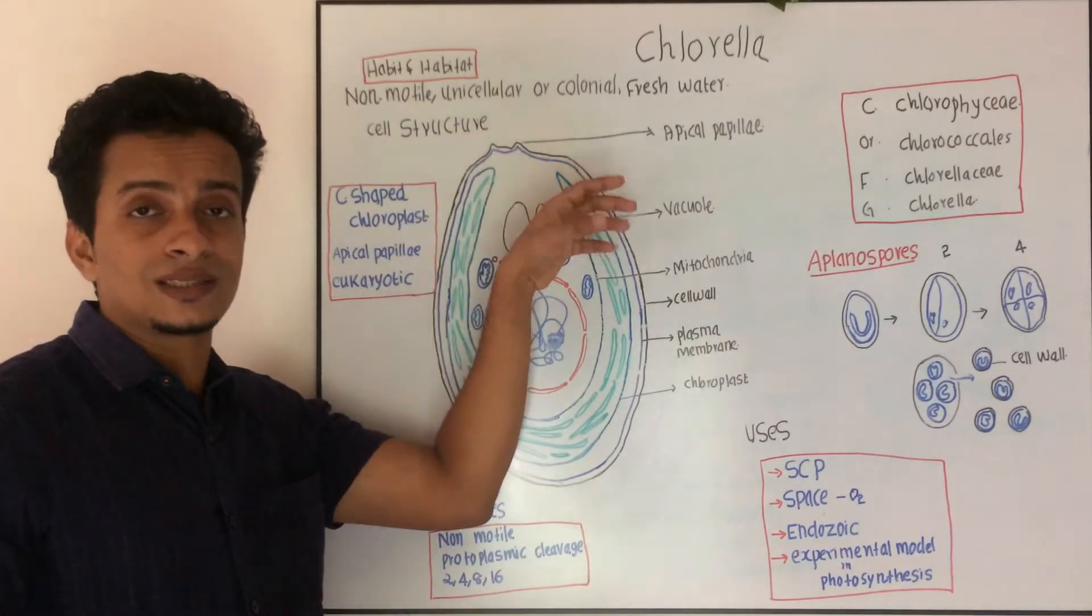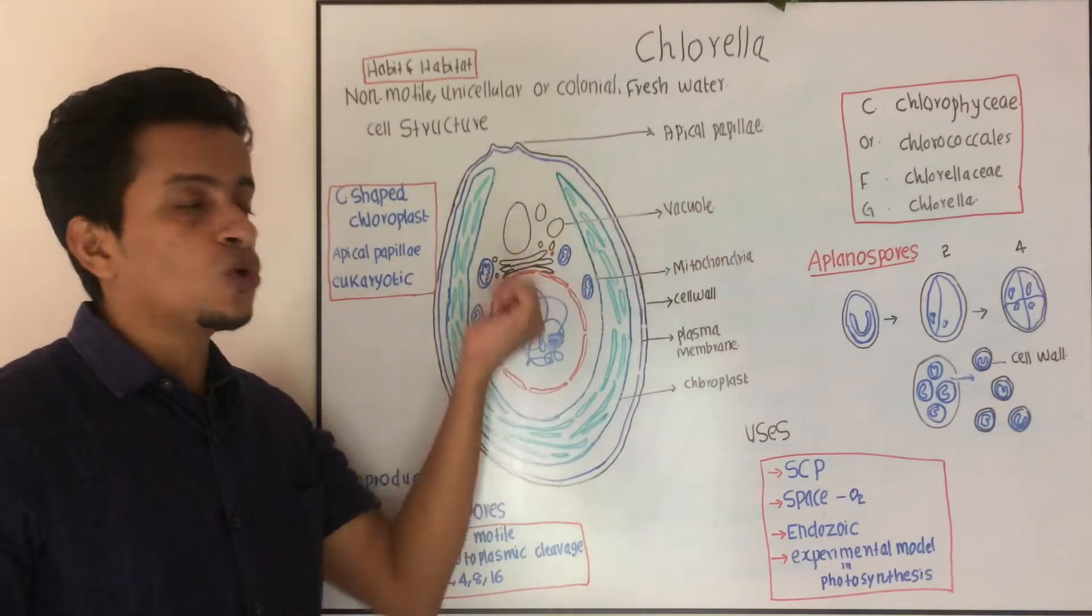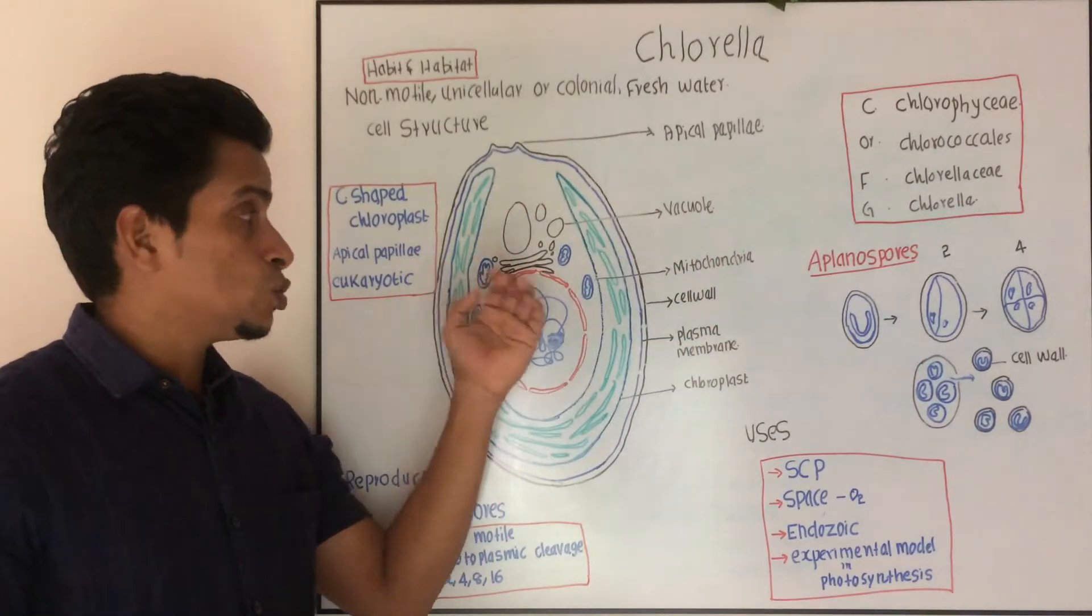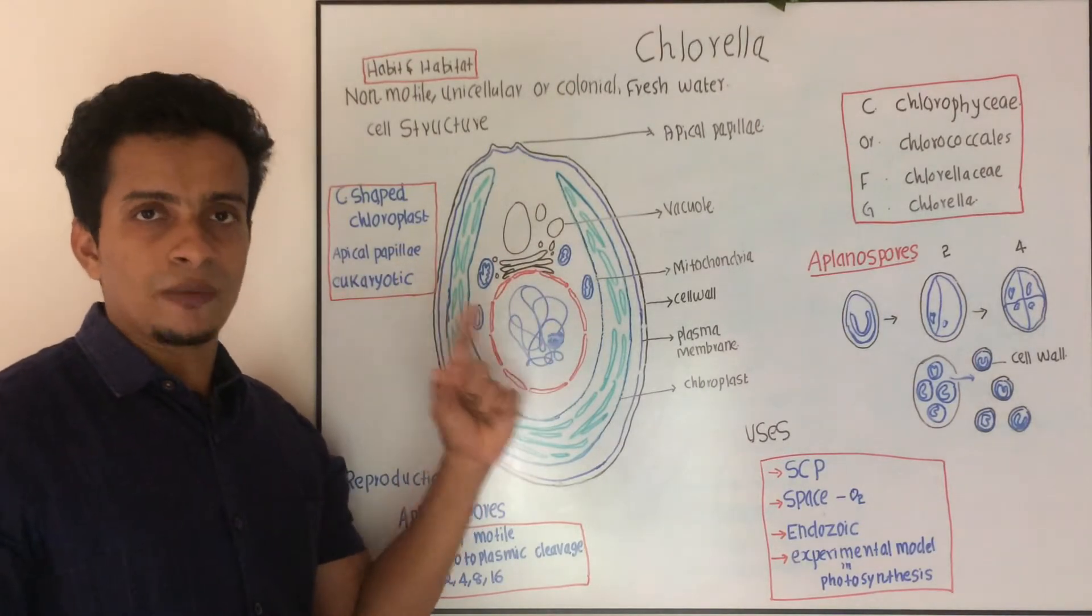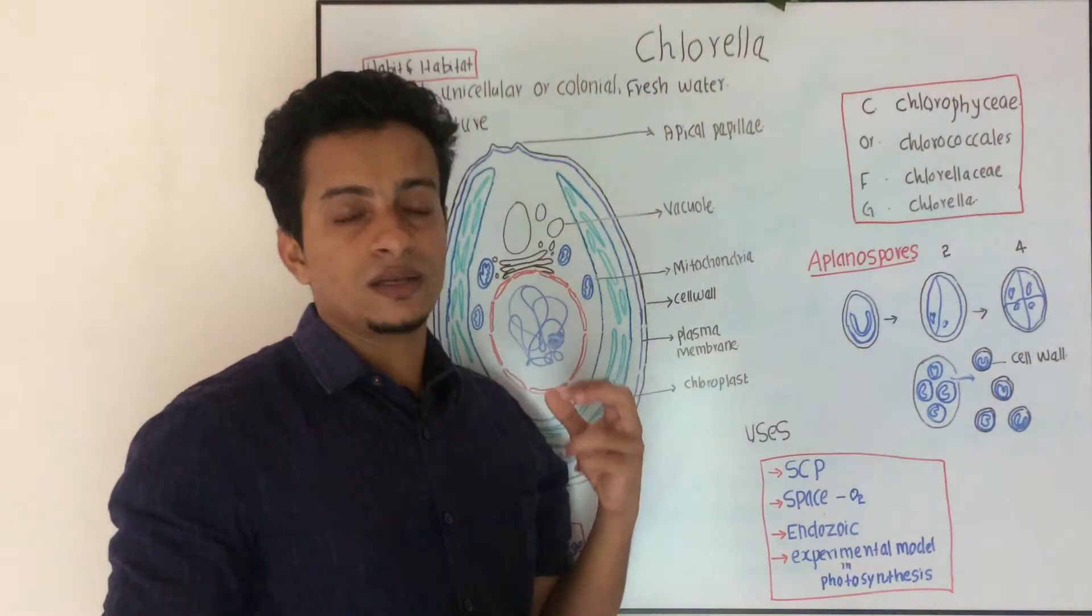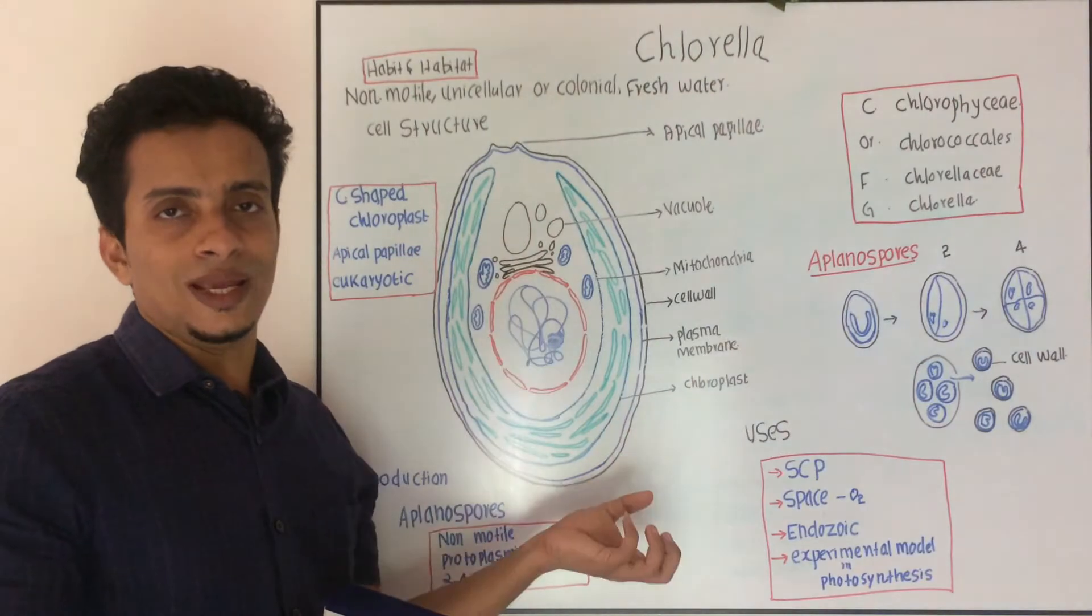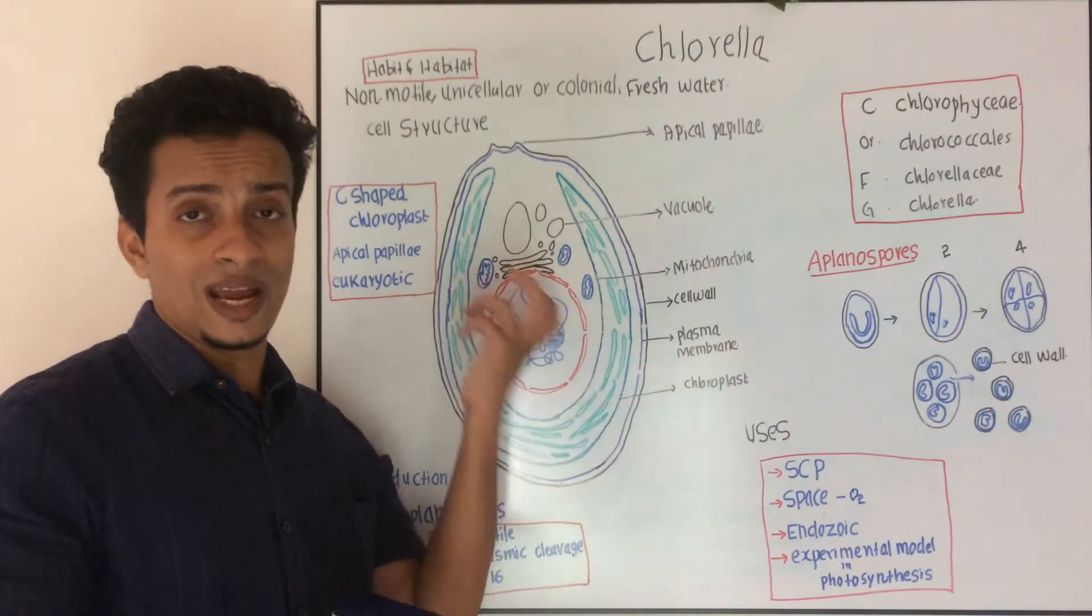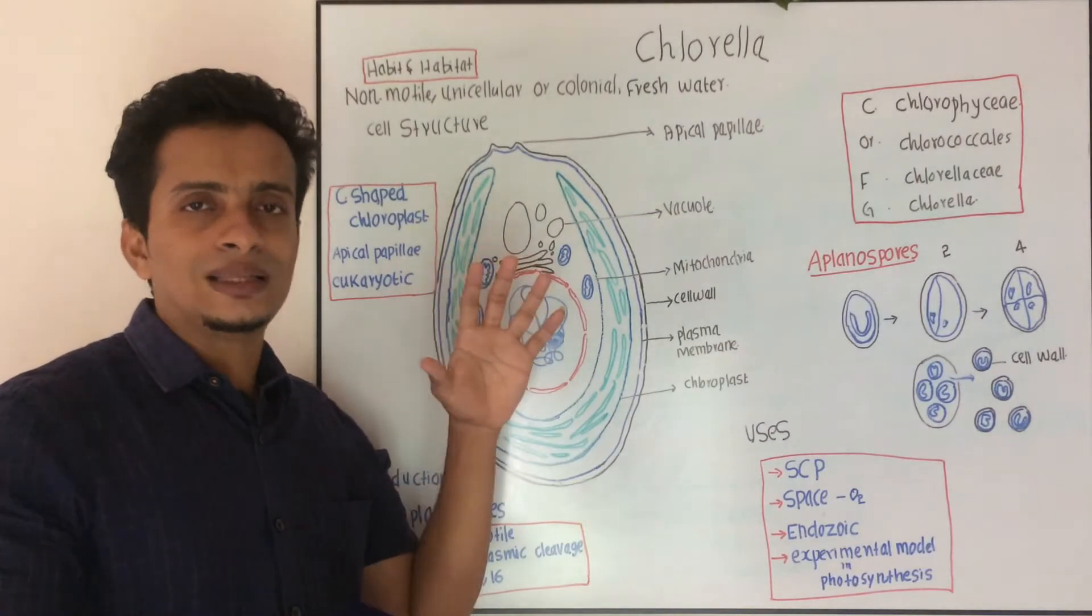This is the external covering end, which is their cell wall, followed by, just below this you can see plasma membrane, which is the selectively permeable membrane. Inner to the plasma membrane, you can see nucleus, chloroplast, mitochondria, endoplasmic reticulum, vacuoles, all other features.